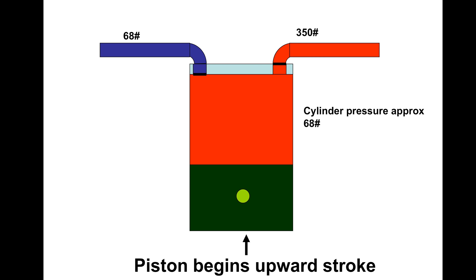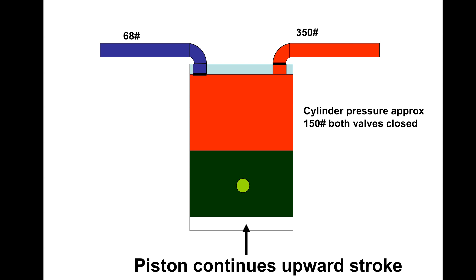Cylinder pressure 68 pounds, where piston is going to start going up. When we hit 150 pounds, nothing's moving, we haven't reached over the 350 yet.